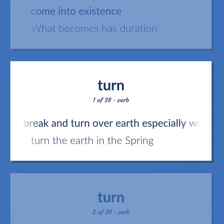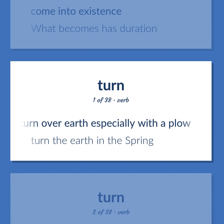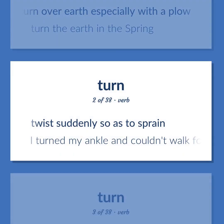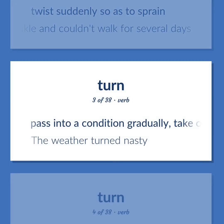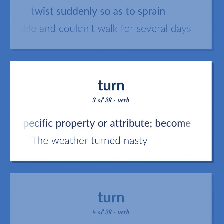To break and turn over earth, especially with a plow. Turn the earth in the spring. Twist suddenly so as to sprain. I turned my ankle and couldn't walk for several days. Pass into a condition gradually; take on a specific property or attribute — become. The weather turned nasty.